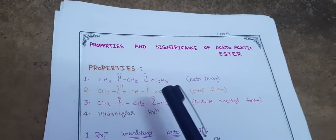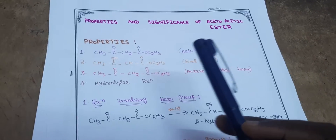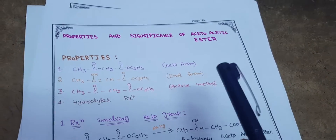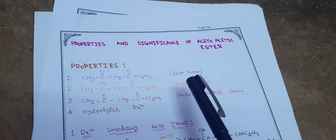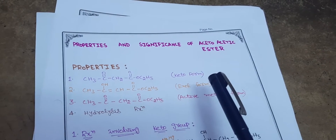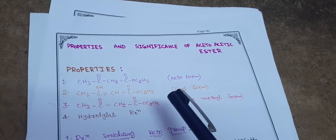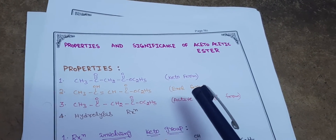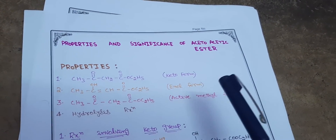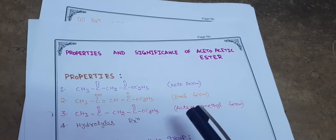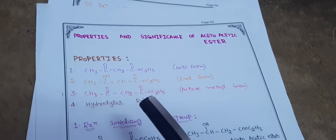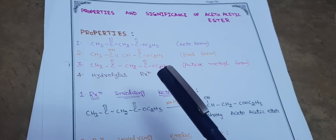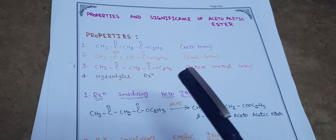In the properties there are mainly four types of reactions. First is reaction with the keto form. Second is reaction involving the enol form. Third is the active methylene form. And fourth is the hydrolysis reaction.